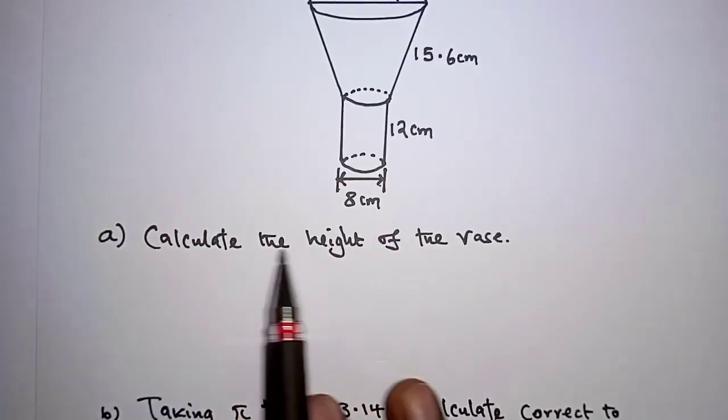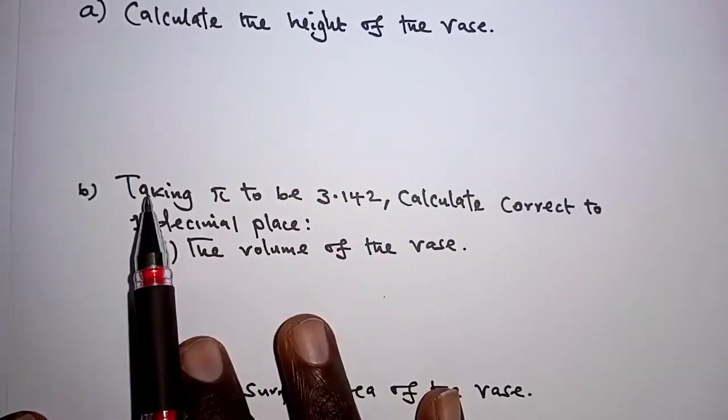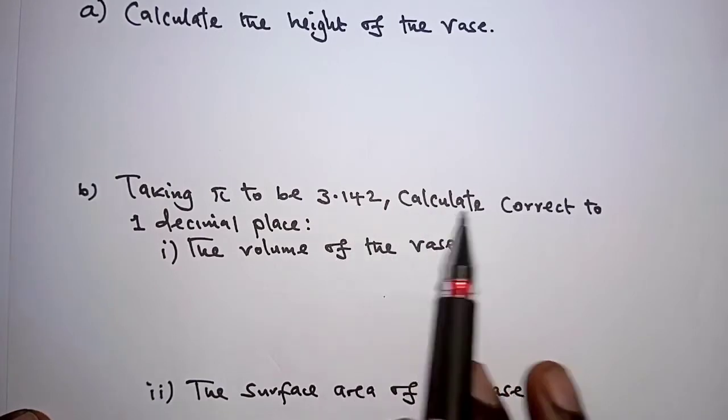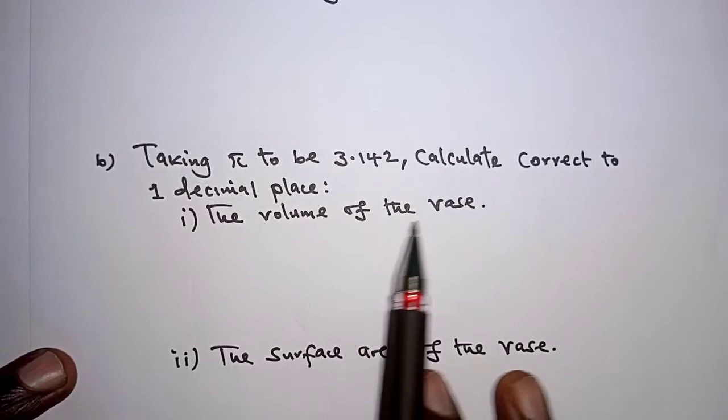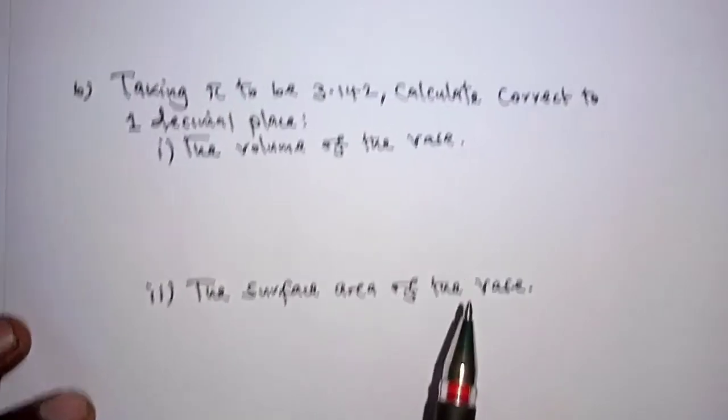Part A, calculate the height of the vase. And then part B, taking pi to be 3.142, calculate correct to one decimal place the volume of the vase and finally the surface area of the vase.